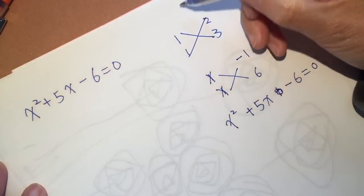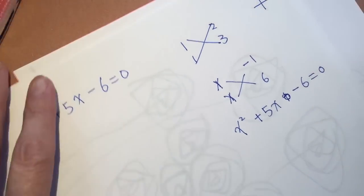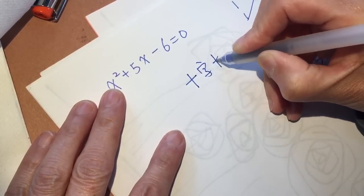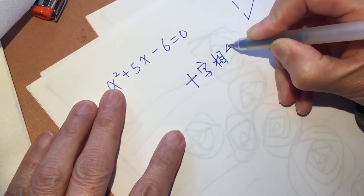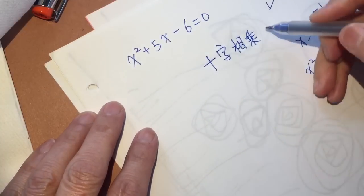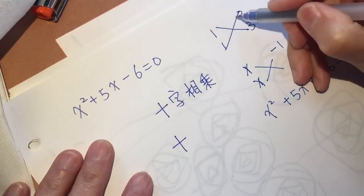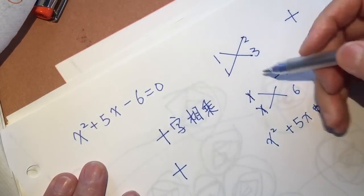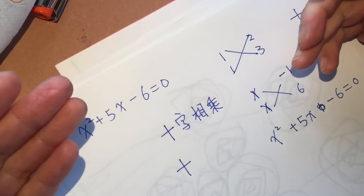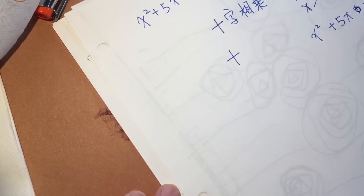In Chinese, it's called 十字相成. It's like 十, I put it here, 十字相成. We call this operation 十字相成, because 十 is a cross. It's like a cross, cross operation to figure out, to factor this polynomial.